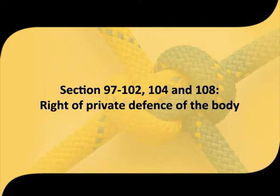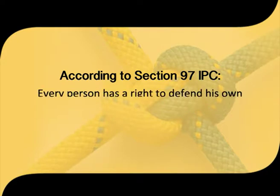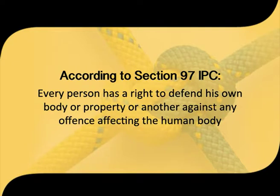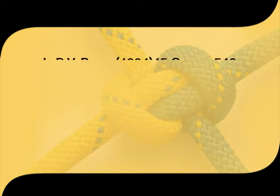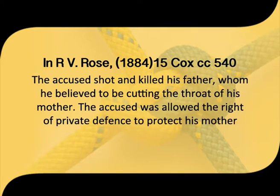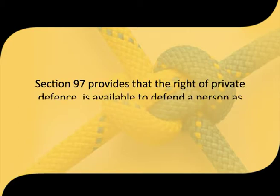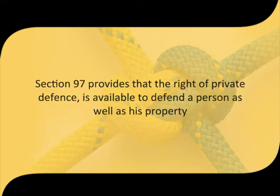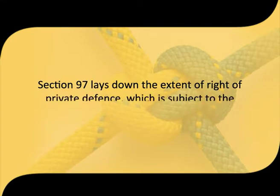Sections 97 to 102, 104, and 106 deal with the right of private defense of the body. According to section 97 IPC, every person has a right to defend his own body or property, or another person's, against any offense affecting the human body. In Indian law, even a stranger may defend the person or property of another, but in English law there must exist some special relationship — such as master and servant, or husband and wife — to defend another. In the case of our verses Rose, the accused shot and killed his father whom he believed to be cutting the throat of his mother; the accused was allowed the right of private defense to protect his mother.